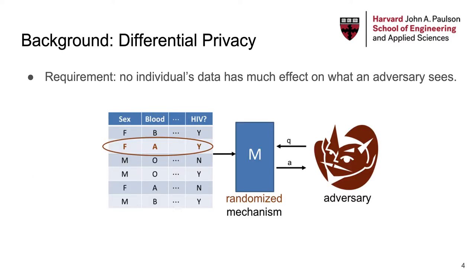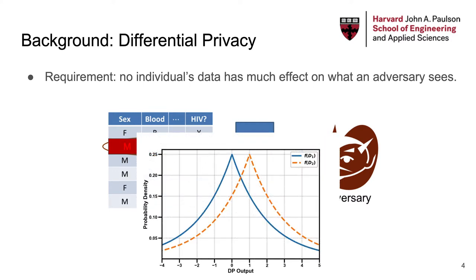Differential privacy is the dominant privacy notion nowadays. The main idea of differential privacy is to carefully randomize an algorithm so that its output does not depend too much on any single individual in the dataset. That is, for a differentially private mechanism, the probability distribution of the mechanism's output on a dataset should be nearly identical to the distribution of its outputs on the same dataset with any single individual's data replaced.